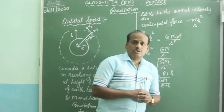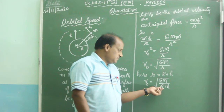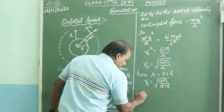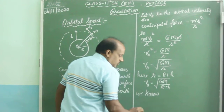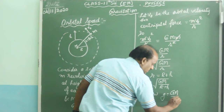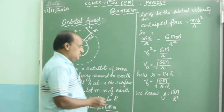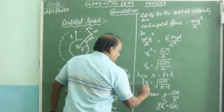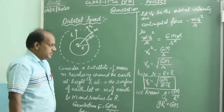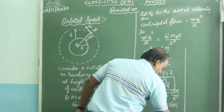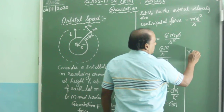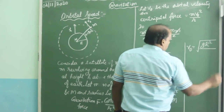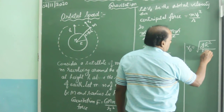Here capital G is the gravitational constant, capital M is the mass of Earth, R is the radius of Earth, and h is the height of the satellite. We know that small g equals GM divided by R squared, so gR squared equals GM. In place of capital GM in the formula, we can substitute gR squared. So we get V0 equals the square root of gR² divided by (R + h).